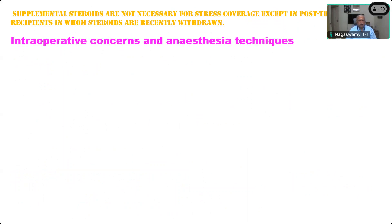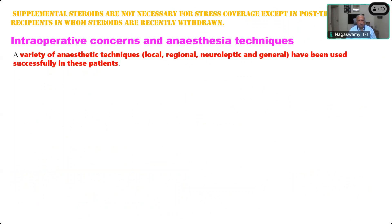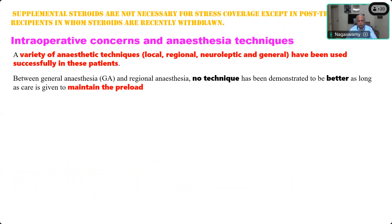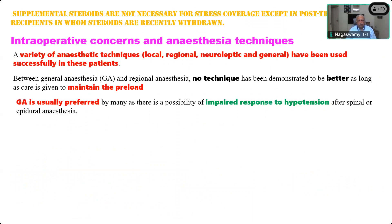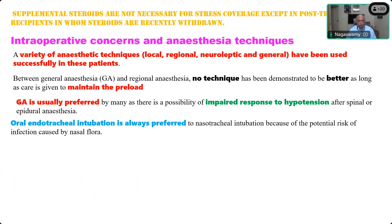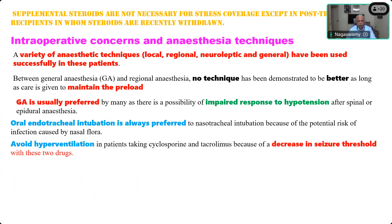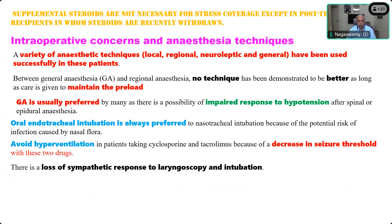Supplemental steroids are not necessary except in post-transplant recipients in whom steroids have been recently withdrawn. For intraoperative management, all anesthetic techniques have been tried — local, regional, neuraxial, and general anesthesia — and no single technique has been found superior. The main principle is to maintain preload; as long as venous return is maintained, the heart will function well. GA is usually preferred because of the impaired response to hypotension after spinal anesthesia. Oral endotracheal intubation is always preferred over nasal intubation due to the risk of infection from nasal flora. Avoid hyperventilation in patients taking cyclosporine, as it decreases the seizure threshold.